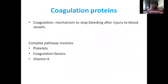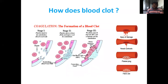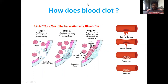Coagulation proteins: the coagulation mechanism stops bleeding after injury to blood vessels. This is a complex pathway involving platelets, coagulation factors, and vitamin K. There are three steps in blood clot formation. First, platelets attach to the endothelium at the injury site. Second, platelets release fibrin and begin to seal the endothelium. Third, the fibrin network traps RBCs and completely seals the endothelium, with fibrin polymers creating a breach seal at the site of injury.